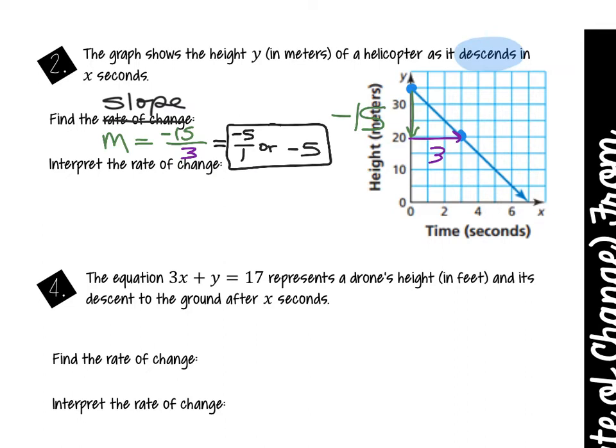A rate of change is talking about a rate — like miles per hour, feet per second, meters per second. Those are all explaining speed. So if I'm saying this helicopter descends and I have meters per second, I'm talking about its speed. How fast is this helicopter going down?